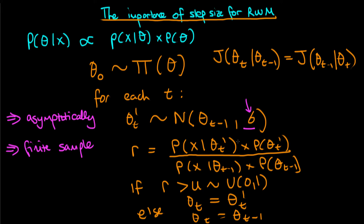If sigma is too small, we accept a relatively high proportion of steps but it takes a long time to explore posterior space. If sigma is too large, the majority of posterior space is of low probability density, so we reject a high proportion of steps and move around inefficiently. If we get sigma just right, we can trade off both extremes — proposing values that are accepted at a reasonable frequency while still moving a relatively long distance in parameter space. The choice of sigma depends on the problem, so it's important to calibrate it to your particular example.